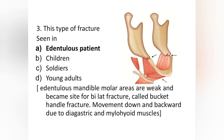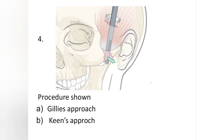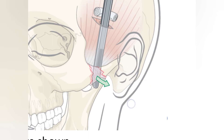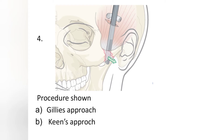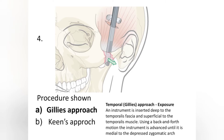Next question — you can see a procedure in the picture. An instrument is inserted just below the zygomatic arch and is being used to elevate the zygomatic arch. What is the name of this procedure — Gillies approach or Keen's approach? This is Gillies approach for elevation of the zygomatic arch.